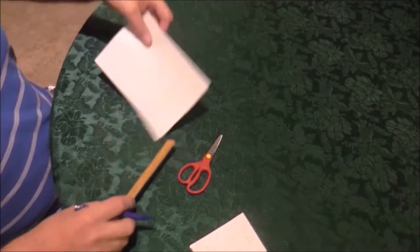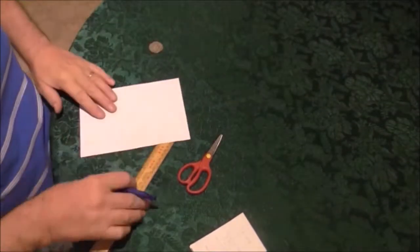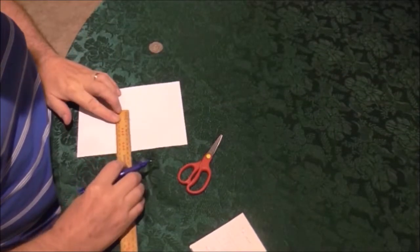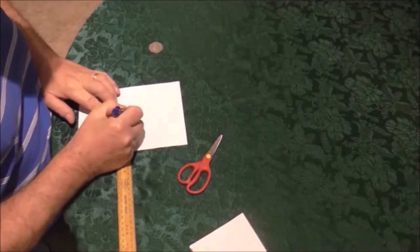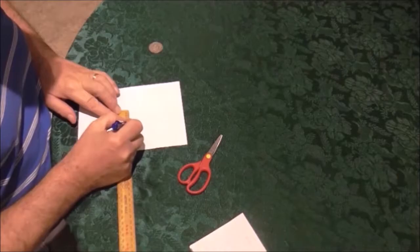So you end up with something that looks like that. And you turn it around and do the same the other way. You get those lined up and you make a mark at the zero and a mark at the 27.